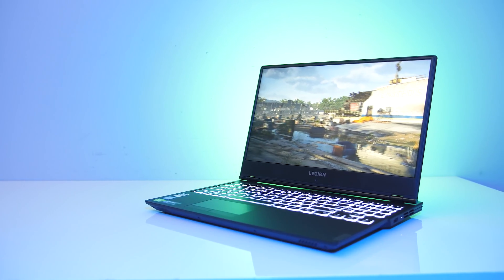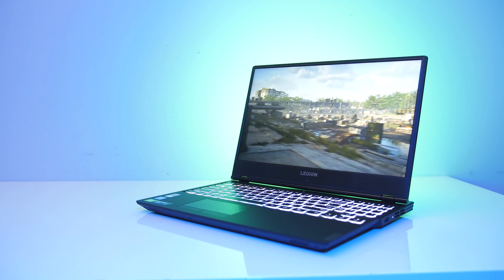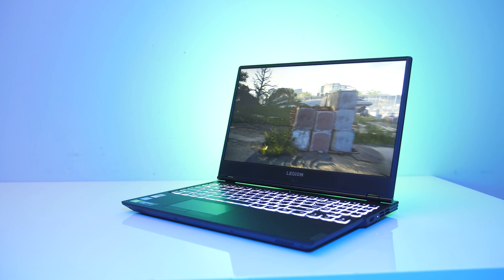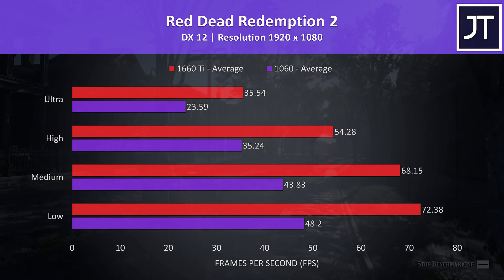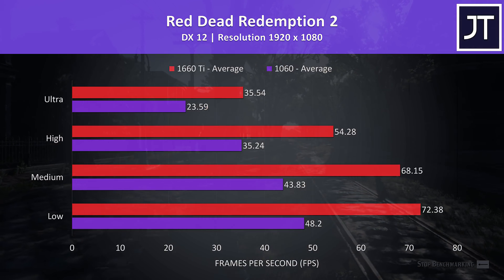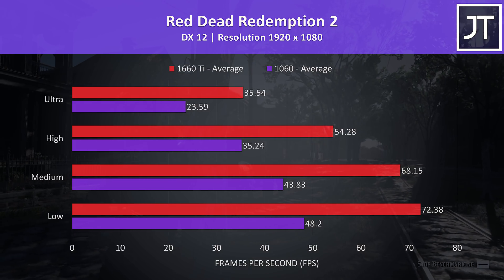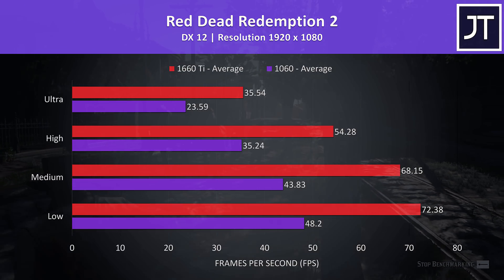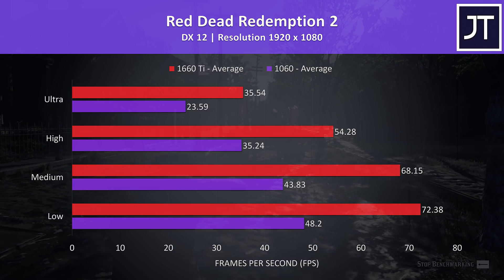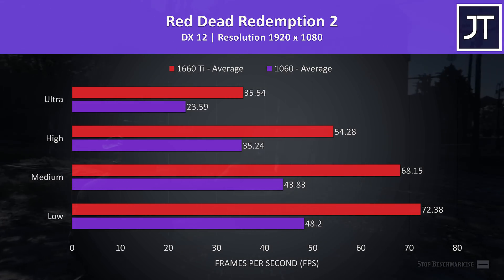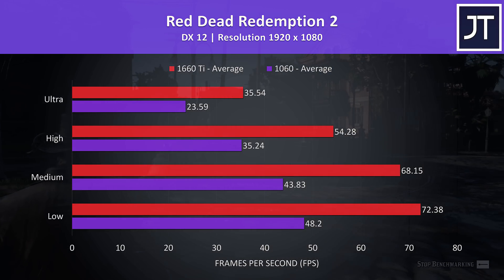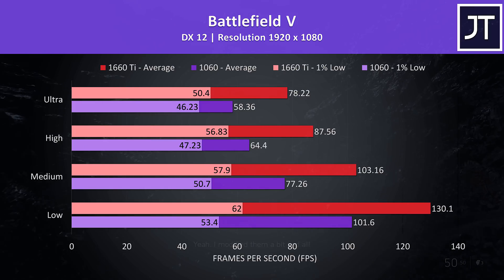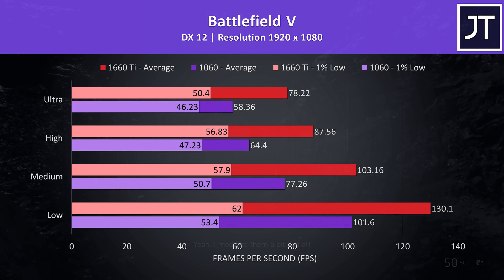We'll start with the games, then other applications like rendering, video editing, thermals, power draw and clock speeds afterwards. Red Dead Redemption 2 was tested with the game's built-in benchmark tool. I've got the older 1060 shown by the purple bars and the newer 1660 Ti shown by the red bars. At max settings, the 1660 Ti was 46% faster in terms of average FPS.